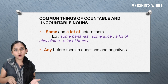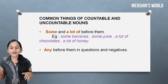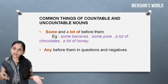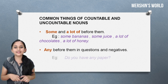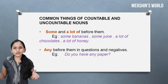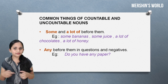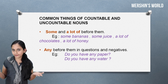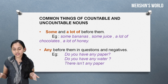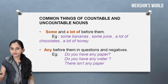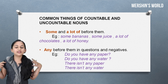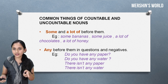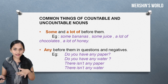Next, both countable and uncountable nouns take 'any' before them in questions and negatives. Examples: Do you have any paper? Do you have any water? There isn't any paper. There isn't any water. Paper is a countable noun; water is an uncountable noun.